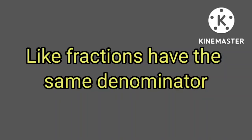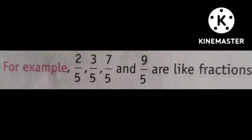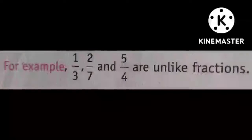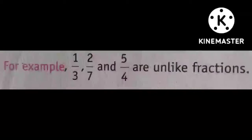Like fractions have the same denominator. For example, 2/5, 3/5, 7/5, and 9/5 are like fractions. Unlike fractions have different denominators. For example, 1/3, 2/7, and 5/4 are unlike fractions.